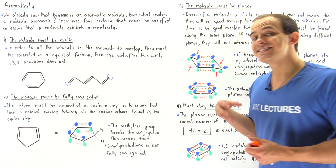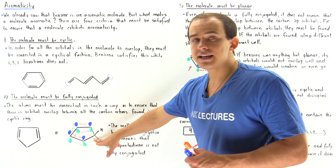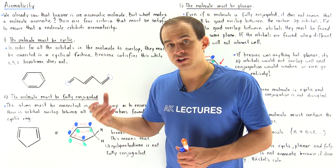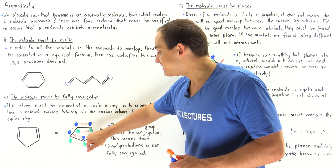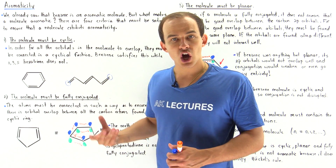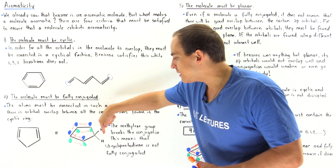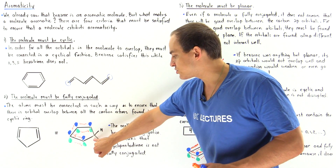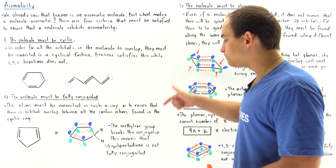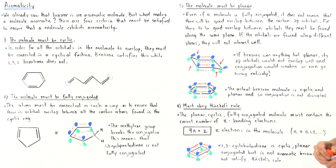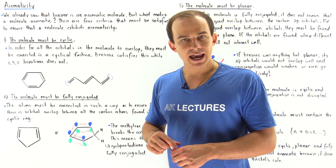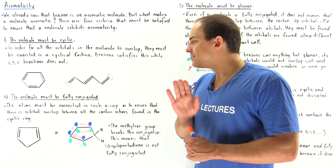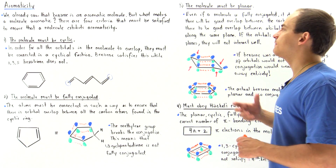However, 1,3-cyclopentadiene is not fully conjugated because of this group here — the carbon containing two H atoms, known as the methylene group. This methylene group disrupts the conjugation and doesn't allow the molecule to be fully conjugated. There is no good orbital interaction; electron density will not flow throughout because the methylene group breaks that conjugation. So, even though this molecule is a ring structure, it is not aromatic because it doesn't satisfy criterion two.